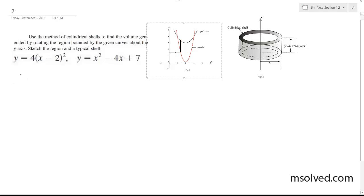We've got to set up our height of the shell, so that's going to be x squared minus 4x plus 7, which is this top portion here, and then minus 4 quantity x minus 2 squared, which is this bottom one. When you subtract the bottom one from the top one, you get the enclosed area.